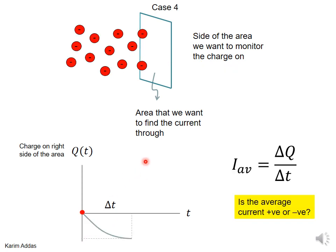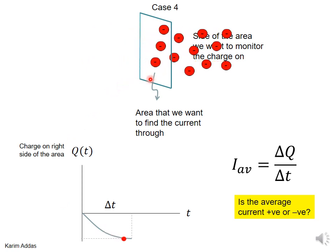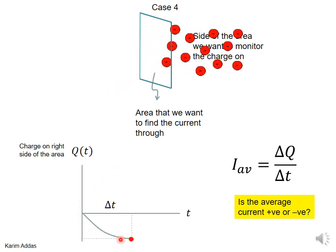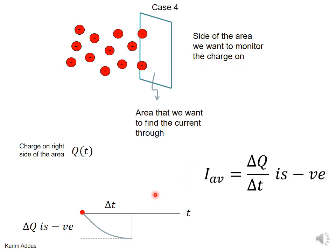Case 4: all the negative charge starts on the left side, so the charge on the right side is zero at time zero. As time goes on, the amount of charge on the right side starts to become more negative. Delta q is q final minus q initial, which is a negative value because the charge on the right side is decreasing. So this corresponds to a negative current.